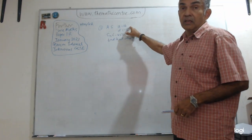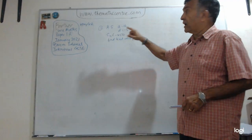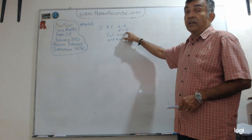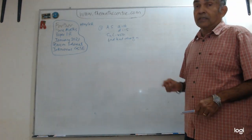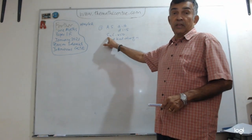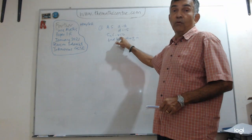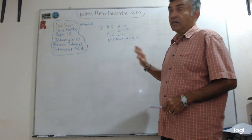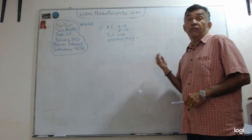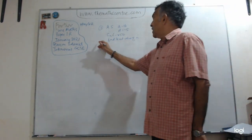The first term is 16 and the common difference is negative 5. You are told the sum to the first n terms is less than negative 450. And you have to find the least value of n.